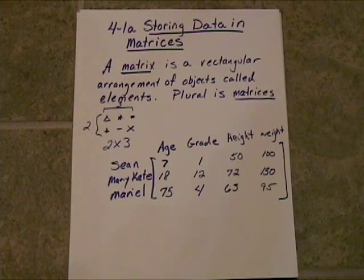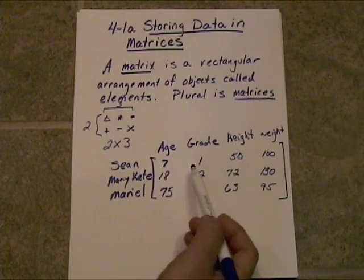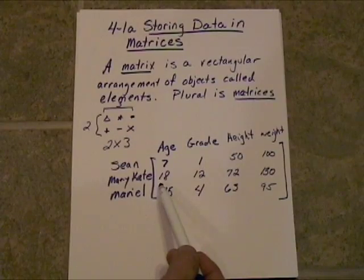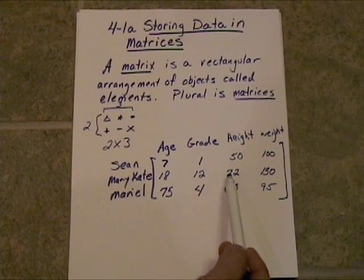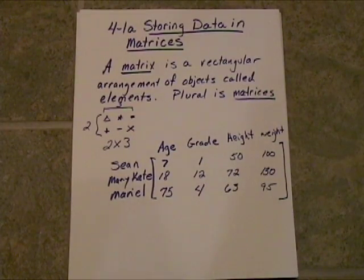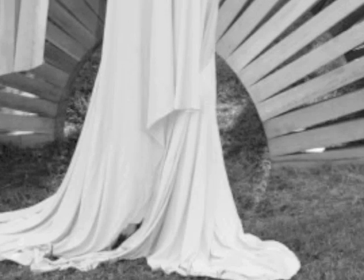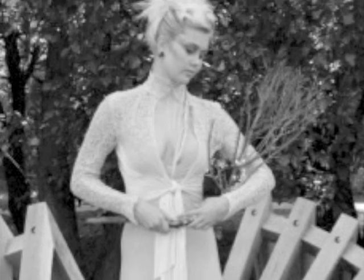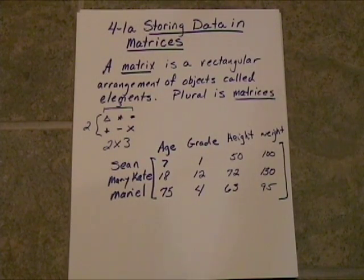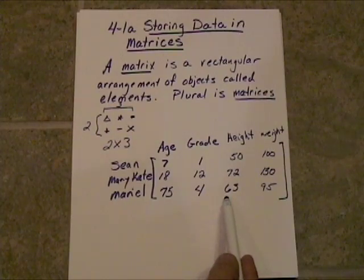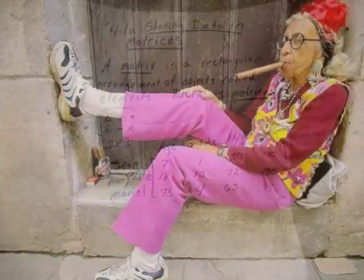Sean is 7 years old, he's in 1st grade, and he's 50 inches tall. Now Mary-Kate is 18, she's in 12th grade, she's 72 inches — 6 feet tall — and she weighs 130 pounds. She is a very tall, very skinny young lady. Then there's Mariel: 75 years old, she's in 4th grade, she is 63 inches — 5 foot 3 — and she weighs 95 pounds.